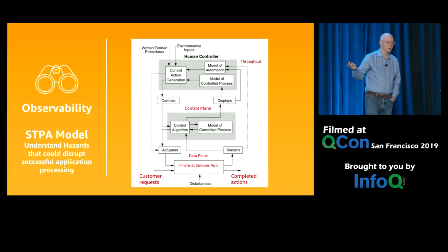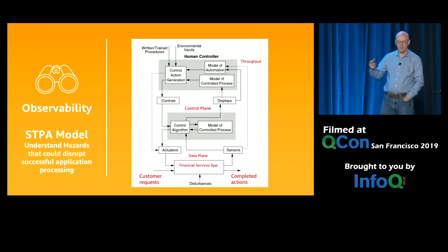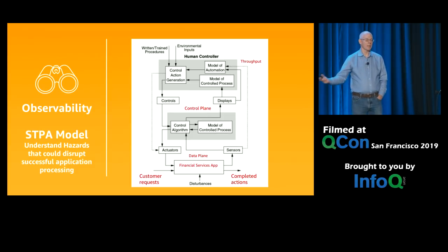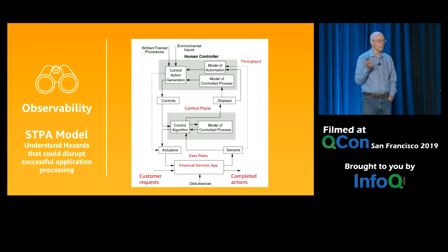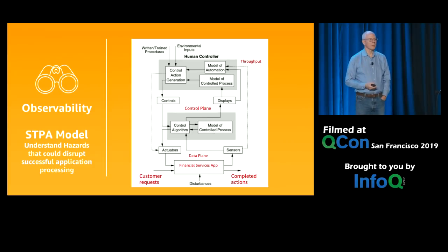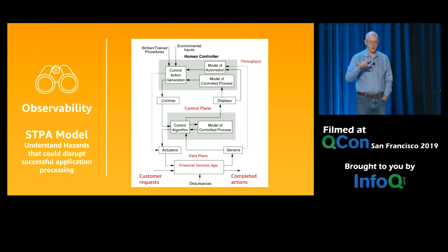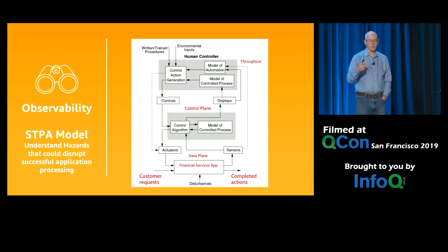Let me change the labels to make it make more sense. At the bottom, a financial services application — customers make requests, and at some point a completed action is returned. Above that, there's a control plane, maybe auto-scaling the number of machines, or doing fraud analysis to decide whether the system should be allowed to do things. Above that, there's a human watching. If the human sees throughput go to zero, they're supposed to pay attention — maybe an alert gets sent. They have to figure out: is the control plane telling me the wrong thing? Is the metric telling me the wrong thing? Or has it really gone to zero?